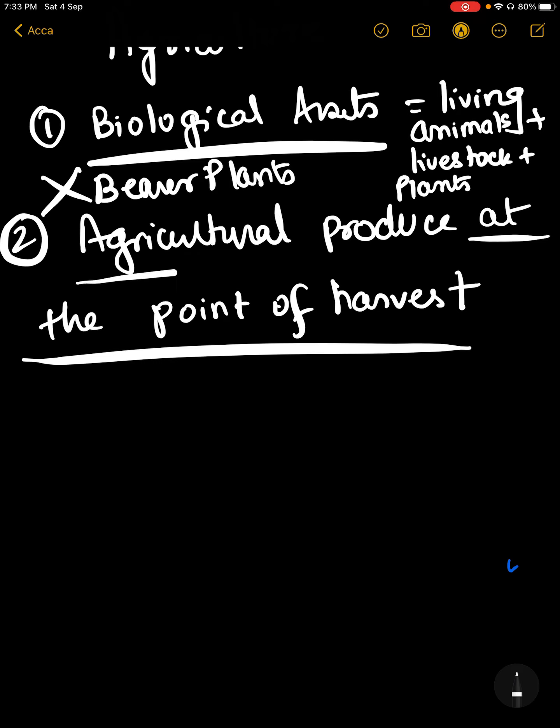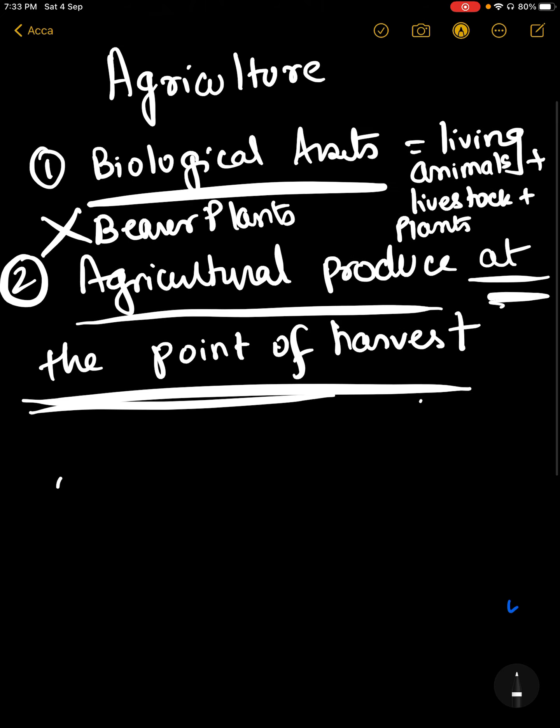Why is it specified as agricultural produce at the point of harvest? Because after harvest, IAS 2, which covers inventory, becomes applicable.